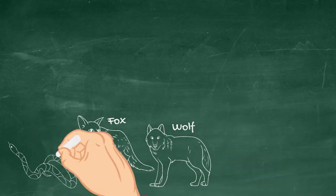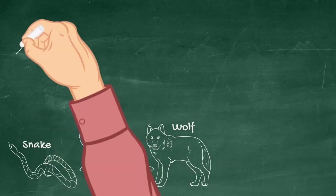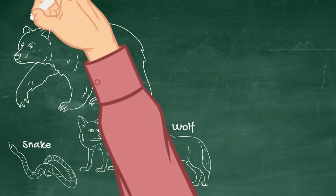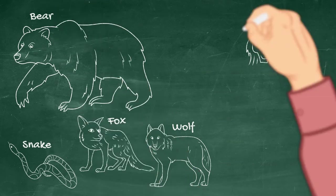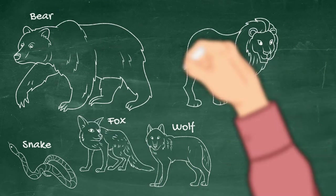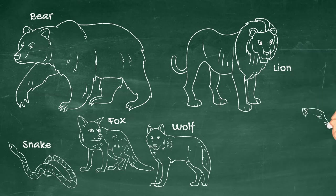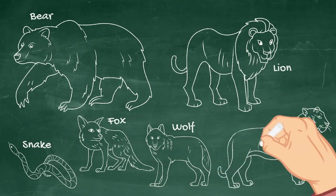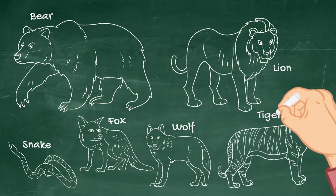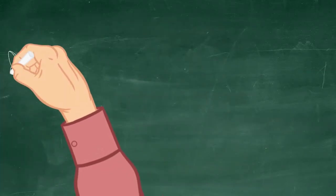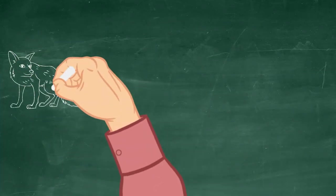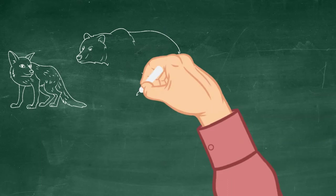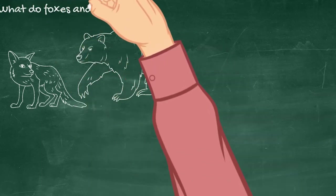Now the first animal is a fox, next we have a wolf, and then a snake. Of course there are different species of snake, but we're just going to be talking in general here. We have a bear, we have a lion, and last but not least we have a tiger.